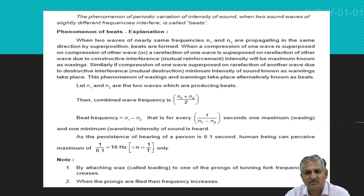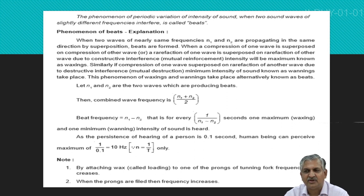When two waves of nearly the same frequencies are propagated in the same direction, by the overlapping we get the phenomenon of beats. As we know, the persistence of hearing is 0.1 seconds, so the maximum number of beats a human being can hear is only 10 hertz — more than that we cannot hear. A human being can hear a maximum of 10 hertz.